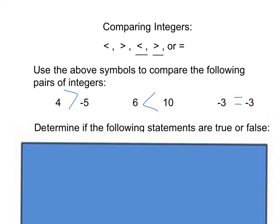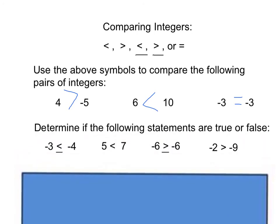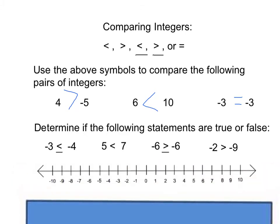Please take a moment to pause the video and write down the next example in your notes. Before resuming, determine whether you believe the following statements are true or false — we will go over them afterwards. Looking at the first statement: negative 3 is less than or equal to negative 4. Negative 3 is further to the right on the number line than negative 4, which means negative 3 is larger than negative 4. Therefore, this statement is false.